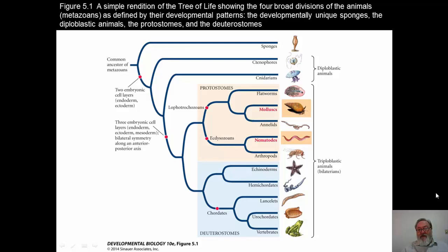If we look at the radially symmetrical organisms, the ctenophores and cnidarians, those are diploblastic animals. Diploblastic means they have two germ layers. They don't have the three germ layers that we've talked about before. They have two germ layers.